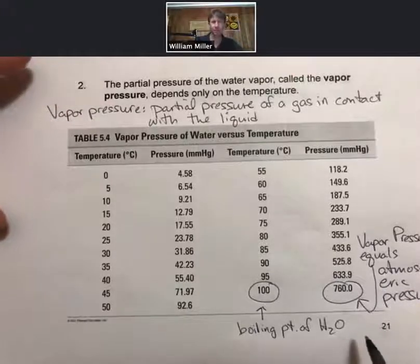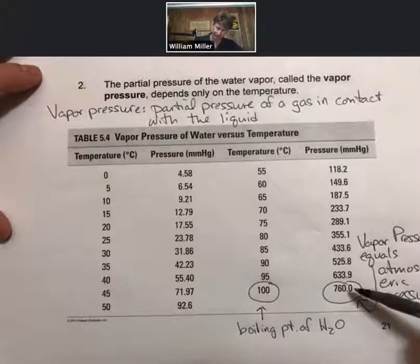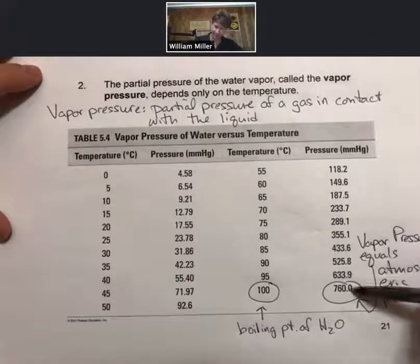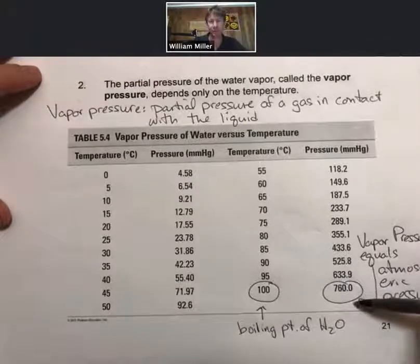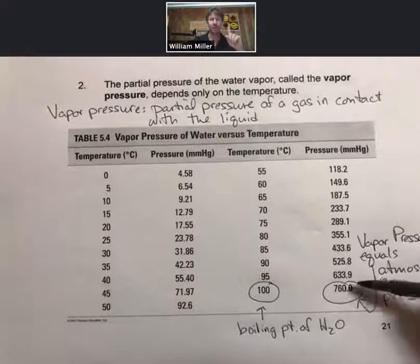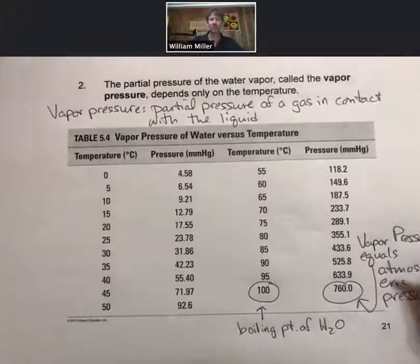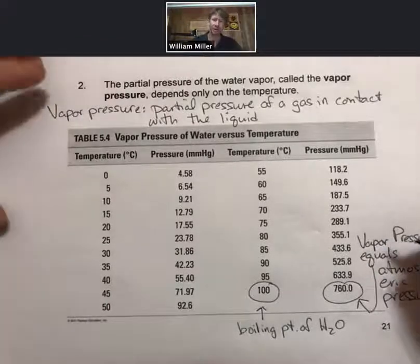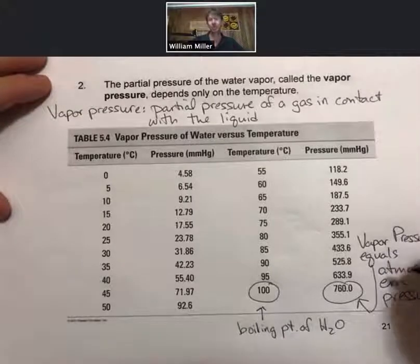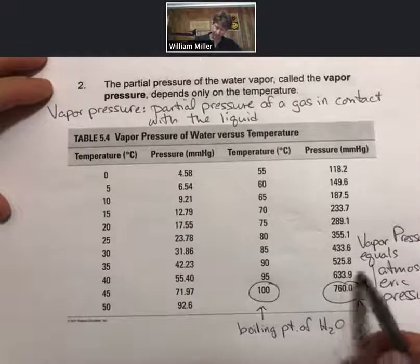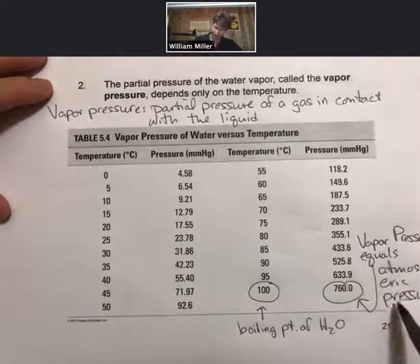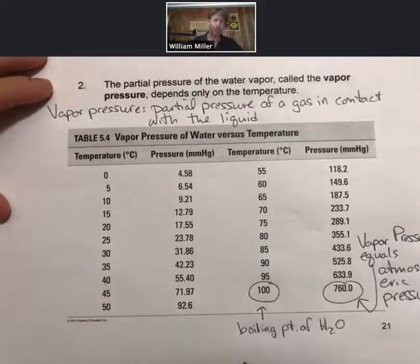When the atmospheric pressure is lower than 760 millimeters of mercury—760 is the atmospheric pressure and is equal to one atmosphere at sea level—as you go to higher and higher elevations, the atmospheric pressure decreases, and then the vapor pressure equals the atmospheric pressure at lower temperatures.